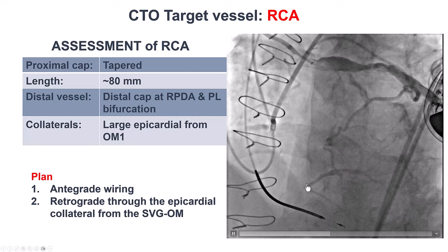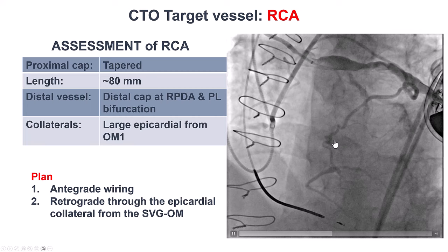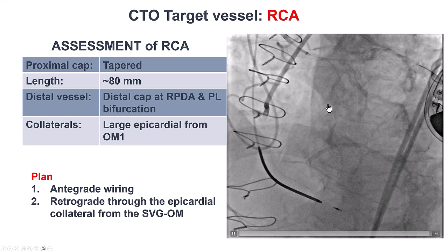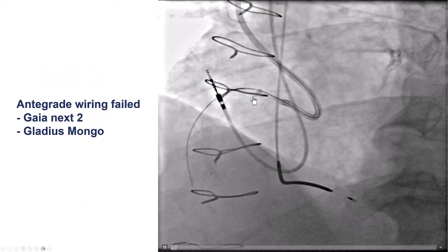Given the risks associated with retrograde PCI through epicardial collaterals, especially in bypass patients that carry the risk of loculated effusions in case of collateral perforation, we decided to first try antegrade wiring, and if that failed, to then attempt retrograde through the epicardial collateral. Antegrade wiring was not successful.